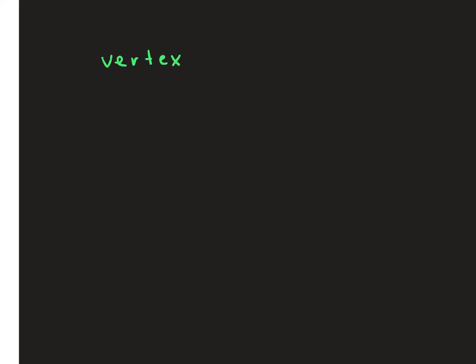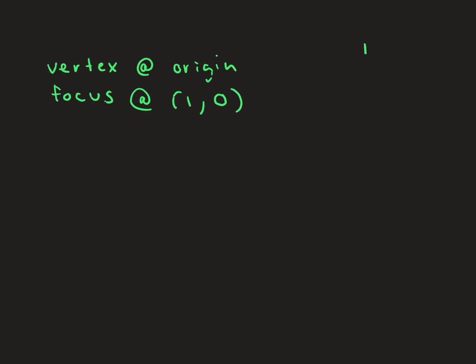Another example: write the equation of the parabola in standard form with vertex at the origin and focus (1, 0). Our vertex is at (0, 0) and our focus is at (1, 0) — we go to the right 1, stay at 0. The parabola opens to the right because it has to hold that focus inside it, like a bowl.